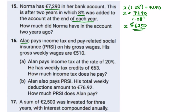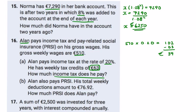Then we have Alan paying income tax and PRSI. His gross weekly wages are €510. He pays income tax at a rate of 20 percent with tax credits of €63. So 20% of €510 is €102, and his tax credits are €63, so he doesn't pay the full €102. Taking €63 from €102 gives €39 — that's how much income tax he pays. His total weekly deductions are €76.92, so we subtract €39 which leaves €37.92 for PRSI.